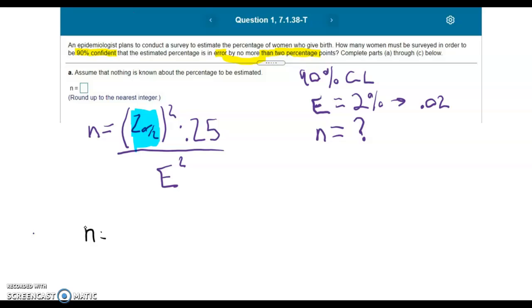We now have N equals 1.645 squared times 0.25, since we don't have a best point estimate, and then over 0.02 squared.